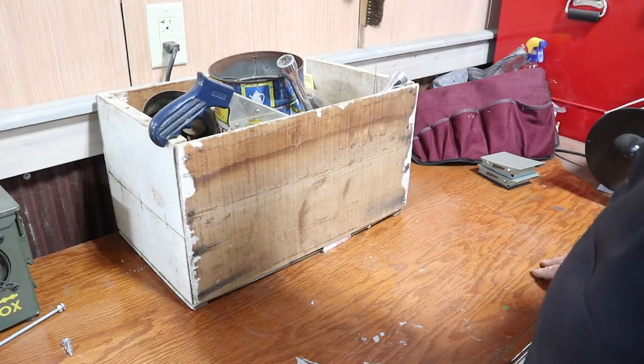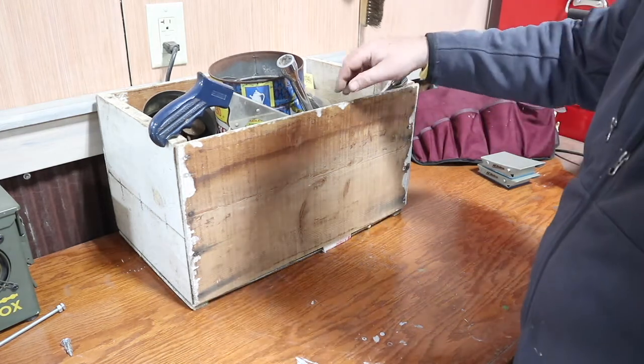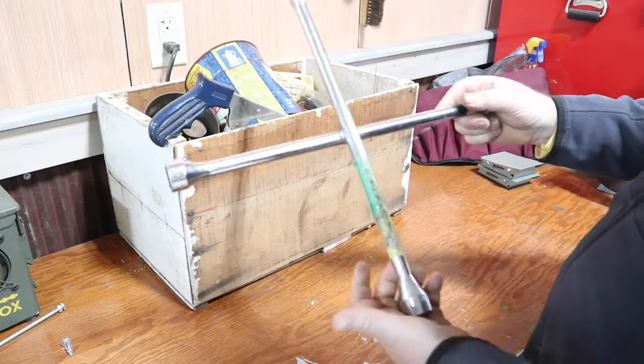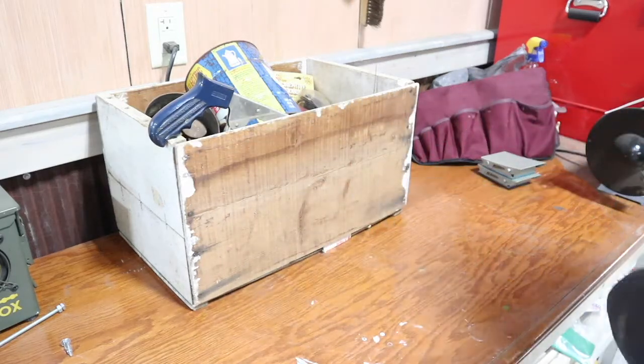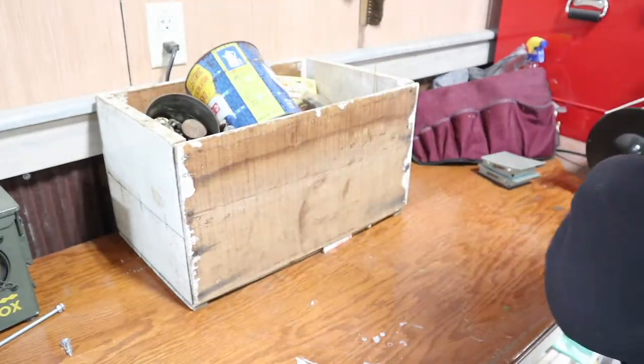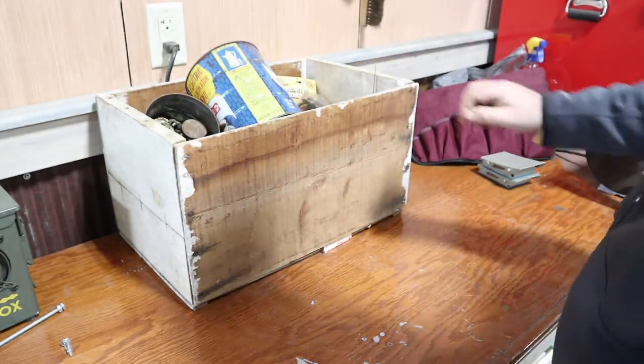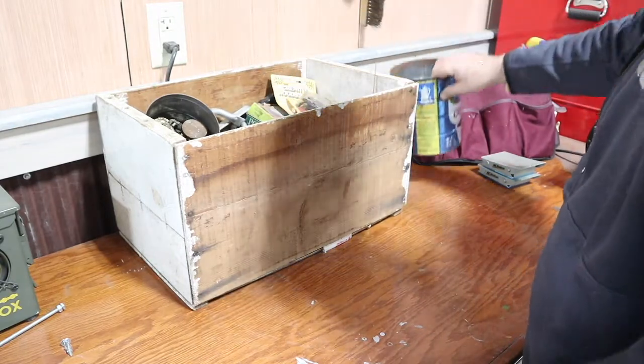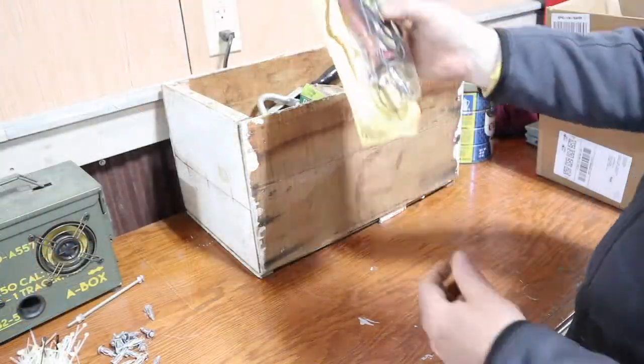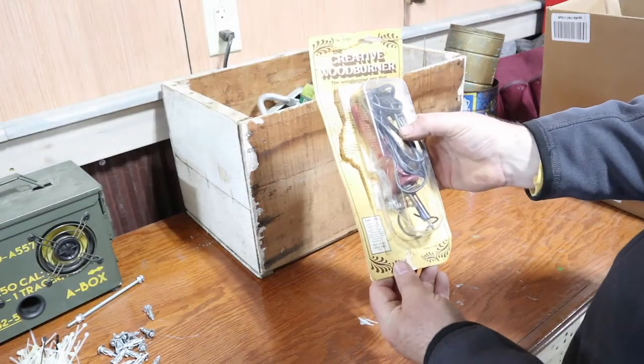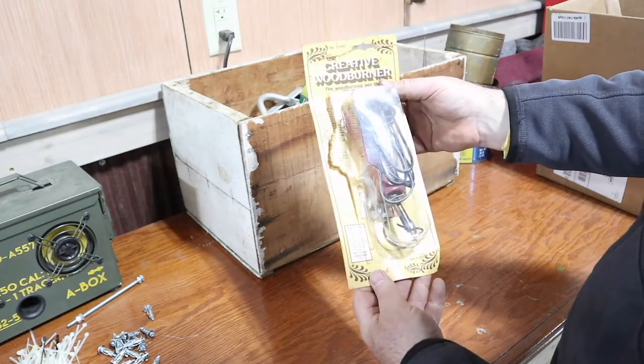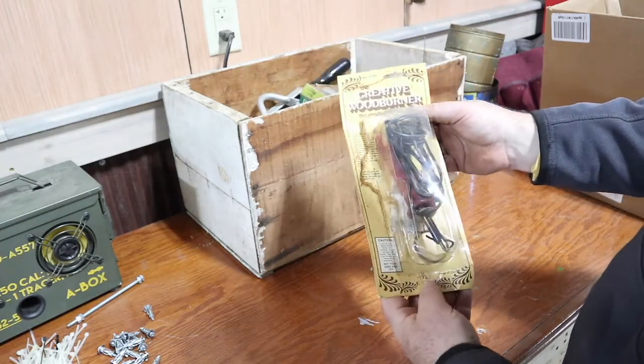All right. Our next bucket is a box. So let's dig right into it and see what we've got. Got a tire iron. Hacksaw. We've got a creative wood burner, wood-burning pen that will do it all. That's kind of old school. Remember doing that as a kid?